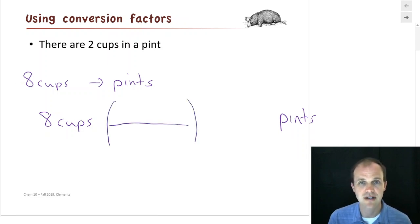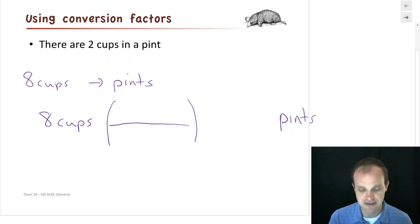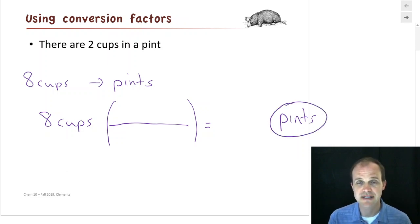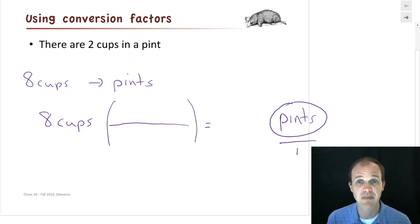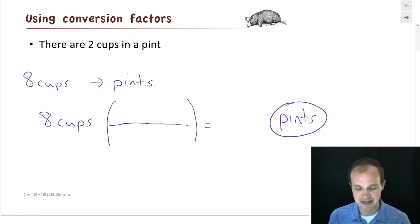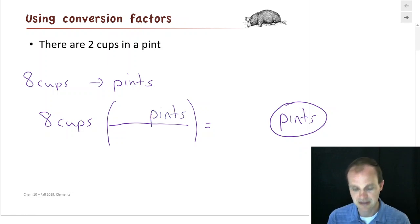In general, we start with our starting value and starting units, and write what we're going for way over on the right. The reason I write it far over is because we're going to write a conversion — and a conversion is always a fraction, so I write an empty set of parentheses. If I'm trying to get pints, pints is in the numerator, which means it needs to be in the numerator of my conversion fraction.